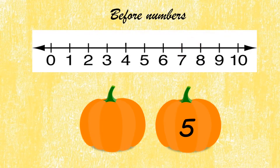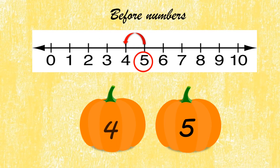Before number: the given number is 5. Identify 5 on the number line, jump backward — the before number is 4.